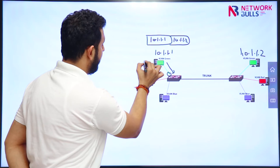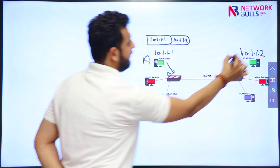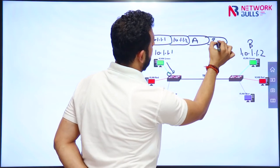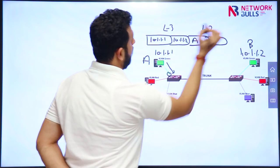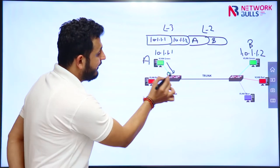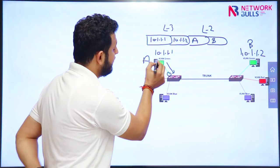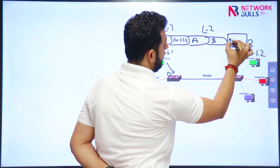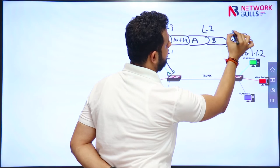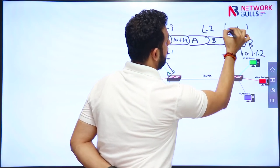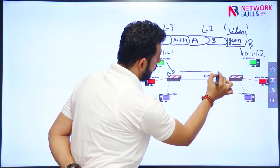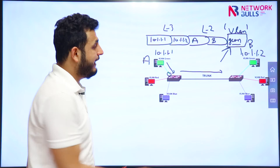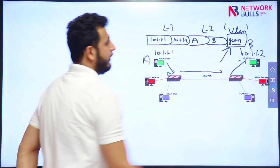Assuming MAC address A as source and MAC address B as destination — this is layer 2 information. When the switch receives the traffic, it knows this user belongs to VLAN green. The switch then adds a tag indicating which VLAN this traffic belongs to — VLAN green — and forwards the traffic to the other switch. The other switch reads the tag, sees it belongs to VLAN green, and forwards it to the correct user.